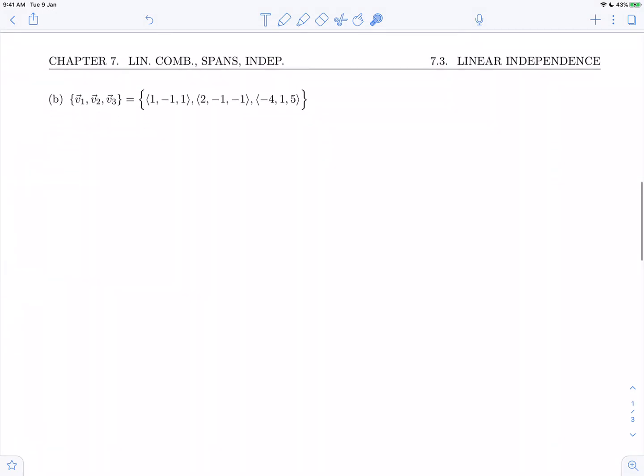To determine whether a set of vectors is linearly dependent or independent, we always need to examine the dependence relation, the dependence equation for the set. So that's the equation a1v1 plus a2v2 plus a3v3 equals 0.